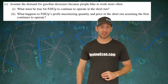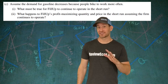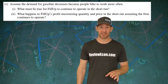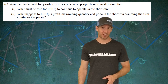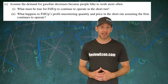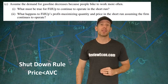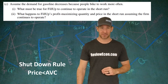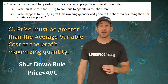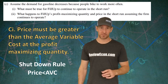For part C, what must be true if this firm continues to operate after a decrease in demand for gasoline? Given that profits have decreased or turned into economic losses, what must be true is that the firm isn't ready to shut down. The shutdown point occurs when price falls below average variable cost at the profit maximizing quantity. So if the firm is continuing to operate, the price must be above the average variable cost at that profit maximizing quantity.